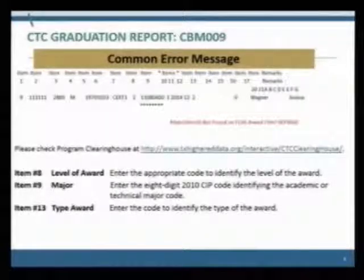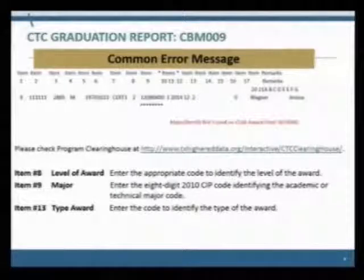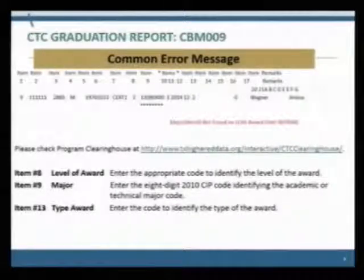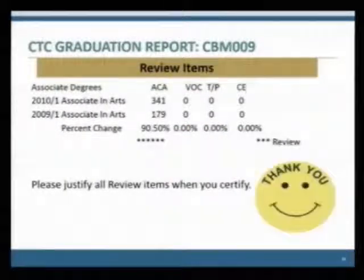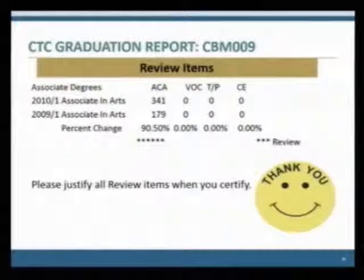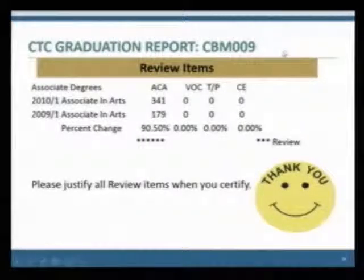One of the common errors on the CBM-009 is 'major item nine not found on the clearinghouse.' Items to check and make sure they are coded properly: item eight — level of award; item nine — the major; and item 13 — the type of award. Last but not least, please justify all review items when you certify your reports, as has been emphasized throughout.